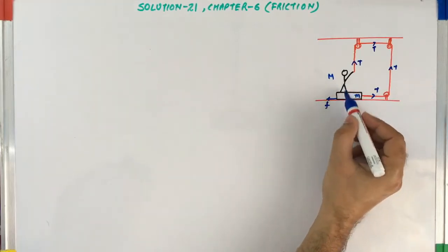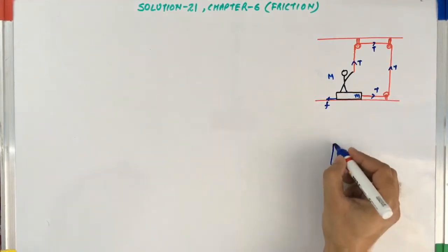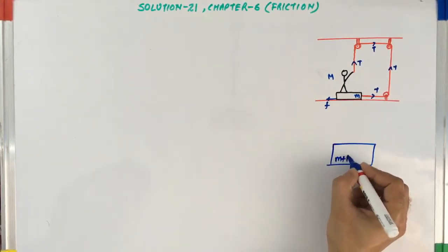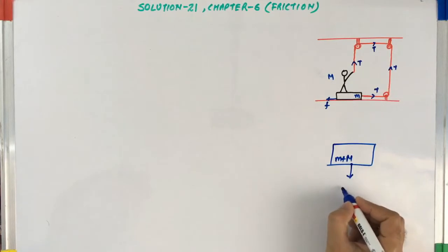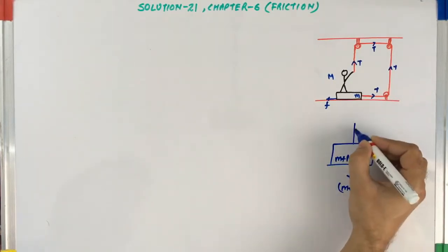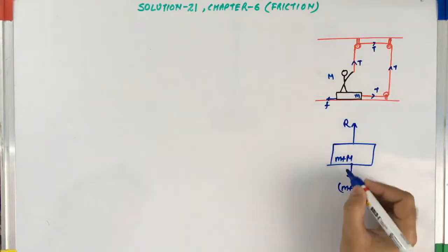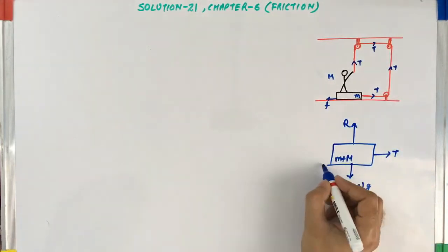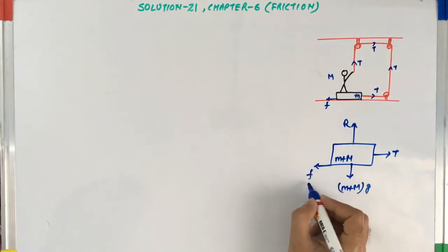I'm considering this man and the block as one system with mass M plus M. Downward force will be M plus M into G due to gravity. The reaction force is in upward direction. The tension T is in the right hand direction and the frictional force is in backward direction.